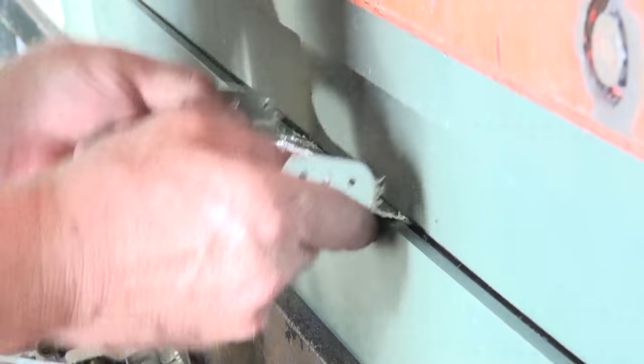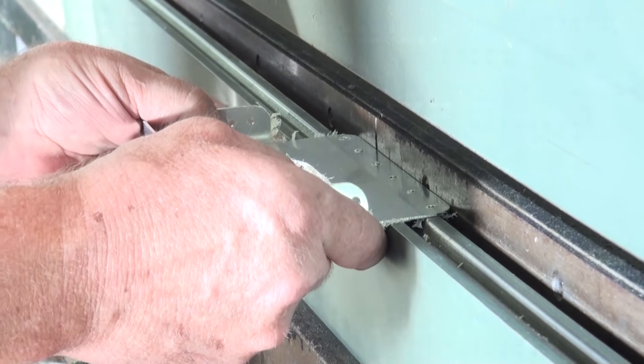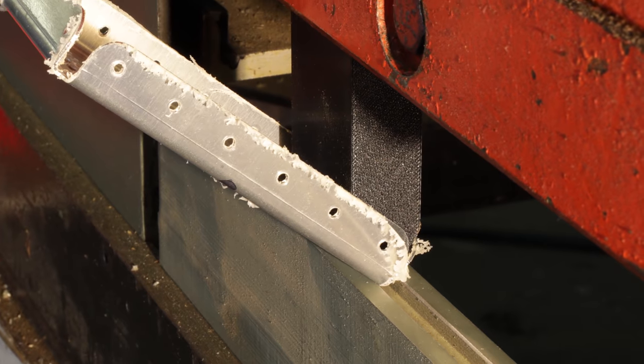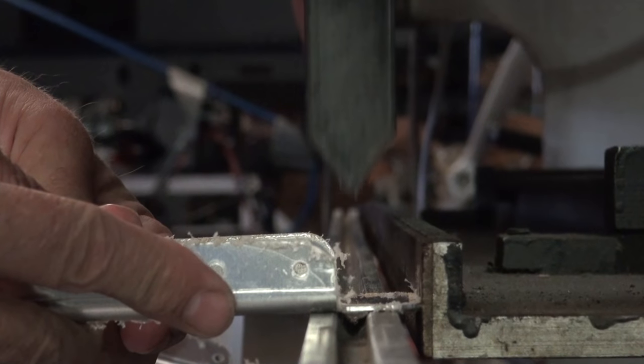This is actually quite simple. All it requires is a bending die that will fit between the two sides of the flanges. This allows the flanges to bend up on the outside of the bending die.